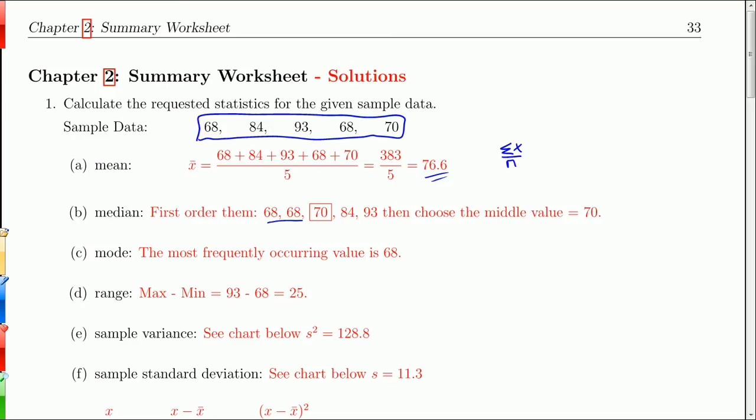For the median, you first have to order them, right? And then you have to split that in half. Fortunately, since it's an odd number, we do have one right in the middle, 70. So we've got a median. The mode, fortunately there are two 68's. So the mode does exist. The winner is 68. The range is the biggest value, 93, minus the smallest value, 68, which is 25.